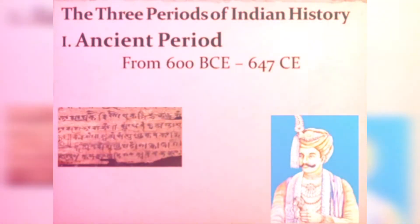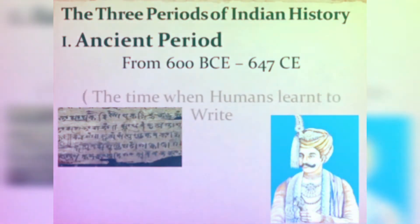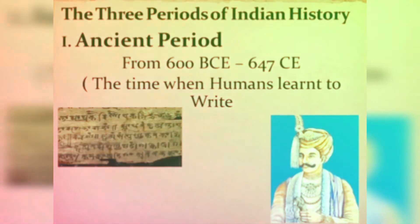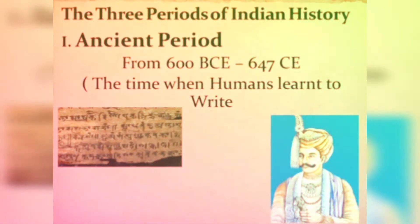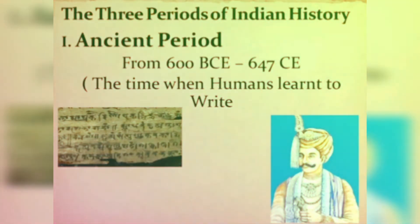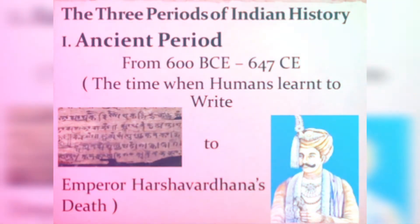The Ancient period extended from 600 BCE to 647 CE. It starts from the time when humans learned to write, to the death of Emperor Harshavardhan. BCE means the era before the birth of Jesus Christ, and CE means Christian Era, that is, after the birth of Jesus Christ.